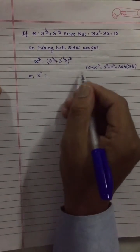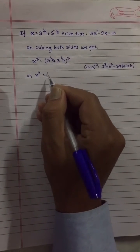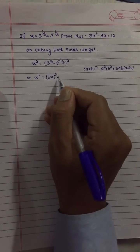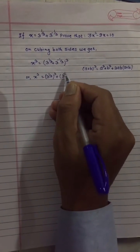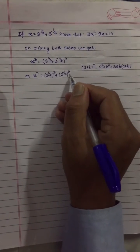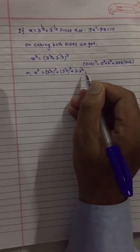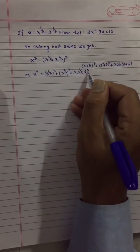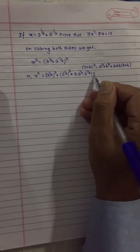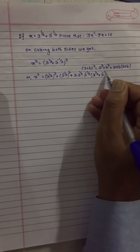x cubed is equal to 3 to the power 1 by 3, cubed, plus 3 to the power minus 1 by 3, cubed, plus 3 times 3 to the power 1 by 3 dot 3 to the power minus 1 by 3, times 3 to the power 1 by 3 plus 3 to the power minus 1 by 3.